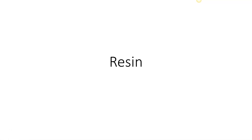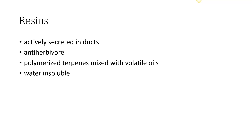Resins are a very important group of chemicals that we find in plants. Resins are actively secreted in ducts, and there are specialized cells within the plants that produce the resin. The resins themselves have an anti-herbivore type action, which means they keep the plant from being consumed, and they are polymerized terpenes.